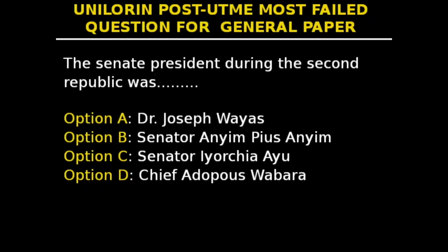Hello, this is question 31 of our series, and it says: the Senate President during the Second Republic. We have option A, Dr. Joseph Wayas; option B, Senator Ayim Paius Ayim; option C, Senator Iotia Ayu; and option D, Chief Adopos Wabara.